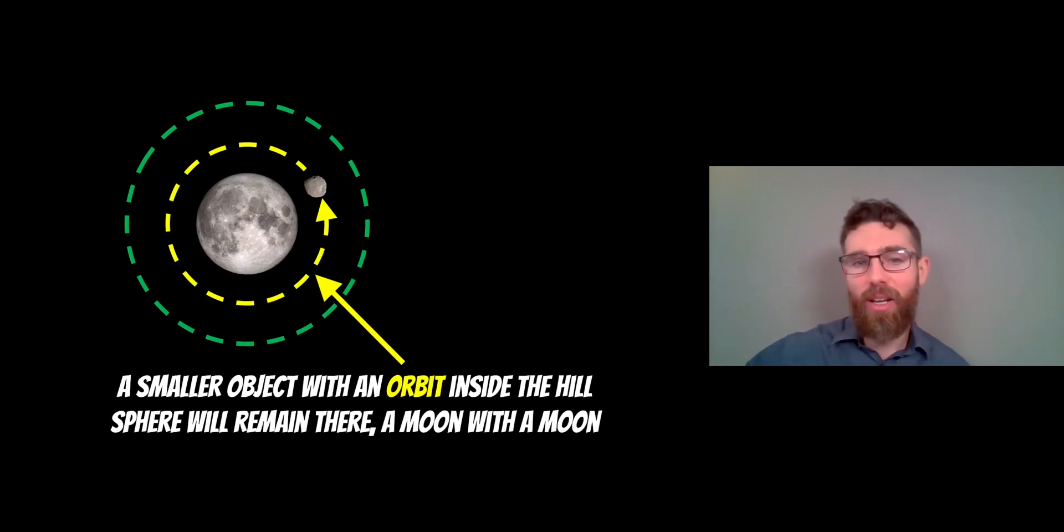So a small object, maybe a small moon, could orbit if it was inside the hill sphere of that moon. So then we have a moon with a moon. Now it would be fairly close, but it's still possible.